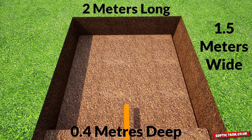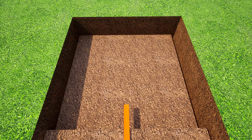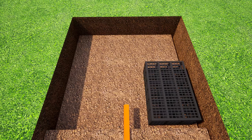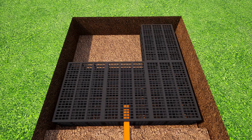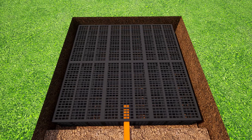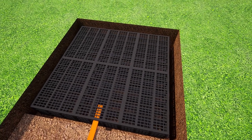So the septic tank soak away hole would be 2 metres long, 1.5 metres wide, and 0.4 metres deep. Once you've dug your hole, put in drainage field crate 1, crate 2, crate 3, crate 4, crate 5, and crate 6 — and there you have it.